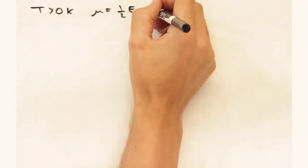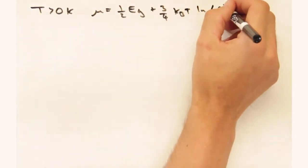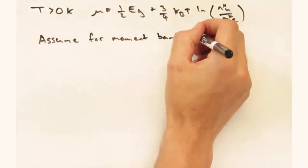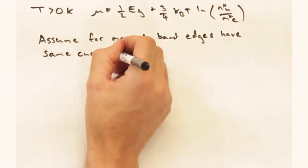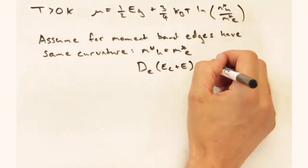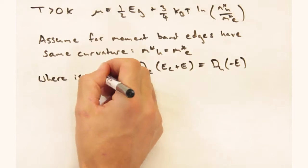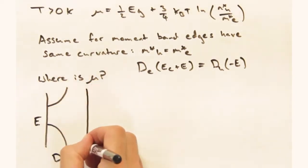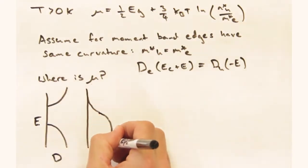Okay, now let's turn the temperature up. The second term also depends on the relative band masses. Let's start by assuming that we have bands with the same curvature at the band edges. In other words, M star for the electrons is the same as M star for the holes. Thus their density of states is also the same. If that's the case, where would you want to put your Fermi level for such an intrinsic semiconductor?